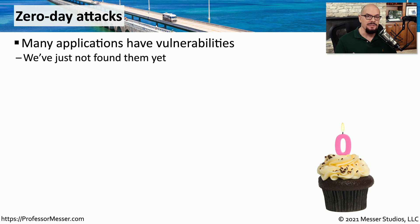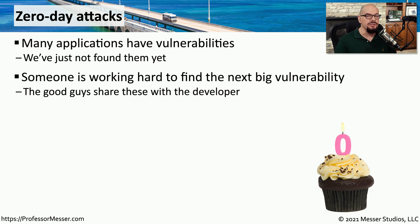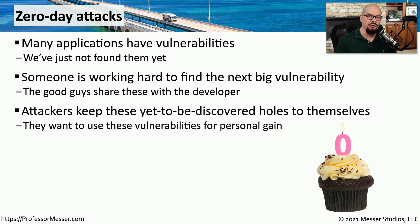The operating systems and applications that we use every day might have a vulnerability inside of them that we just haven't found yet. Researchers know that if they can find one of those vulnerabilities, they can provide that to the manufacturer, and then the manufacturer can close those vulnerabilities before they become a problem. Attackers, however, would like to find these vulnerabilities so they can gain access to data or information that normally they would not have access to.